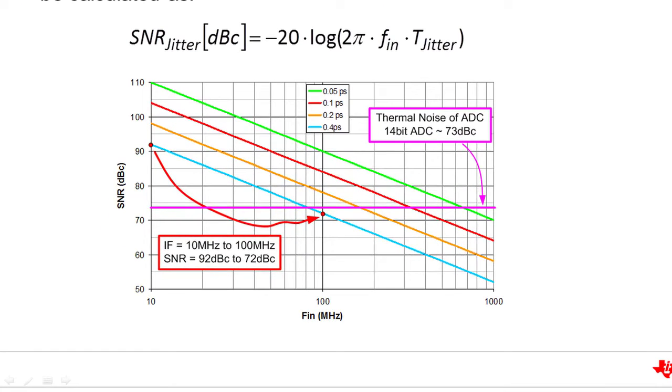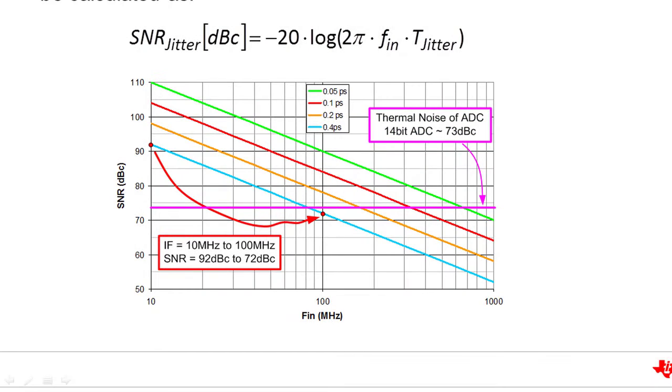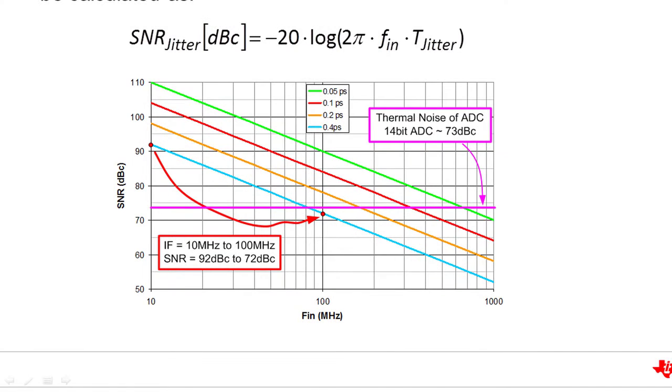The example figure below shows a 14-bit ADC with a thermal noise of about 73 dB. This is the pink horizontal line. Additionally, we can see four traces that show the SNR due to jitter plotted for 50, 100, 200, and 400 femtoseconds. With a sampling clock jitter of 400 femtoseconds, for example, the SNR due to jitter degrades by 20 dB when the input frequency changes from 10 to 100 MHz.